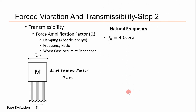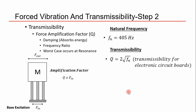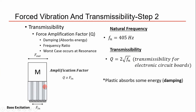To calculate transmissibility, we use a convenient relation for electronic circuit boards: transmissibility is proportional to two times the square root of the natural frequency calculated in step one. Because we have a plastic spacer providing damping, I'm assuming it removes 50% of the energy that amplifies the force output. The resulting amplification factor comes out to 20 — so any load put in gets amplified by 20 at the top.